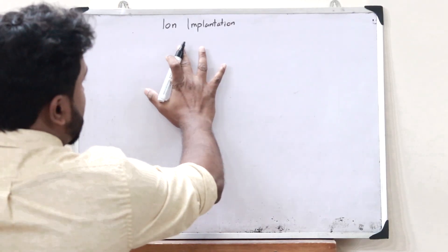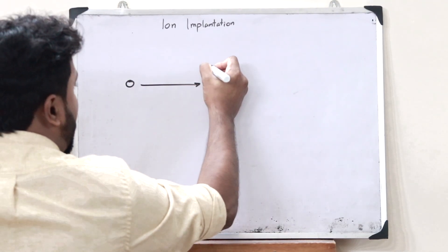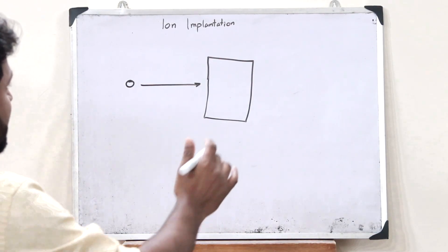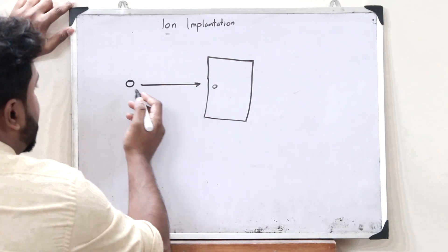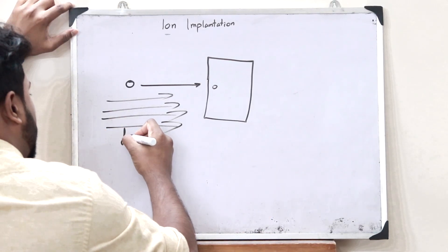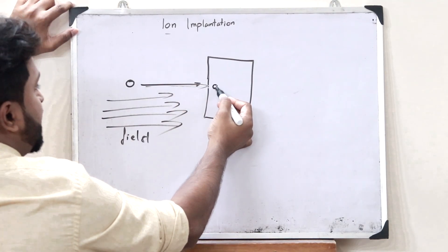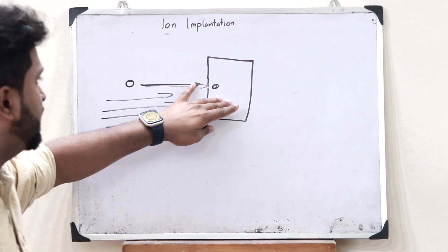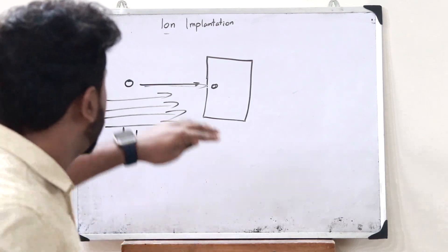Ion implantation, just like the name suggests, is a process by which certain ions are implanted or bombarded onto a particular semiconductor material. Here, these ions are accelerated very quickly in a particular field, and with very high acceleration, they hit this particular semiconductor material and are impacted on top of it. This process is done to change the properties of a material — the physical properties, the chemical properties, or even the electrical properties. This is the basic idea behind ion implantation.